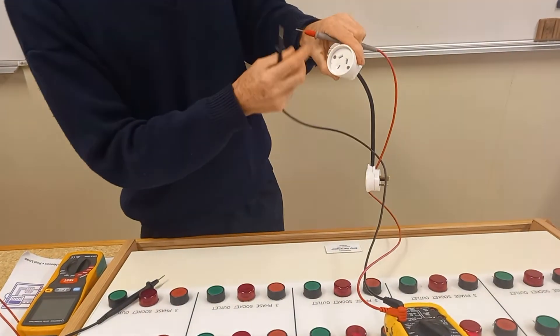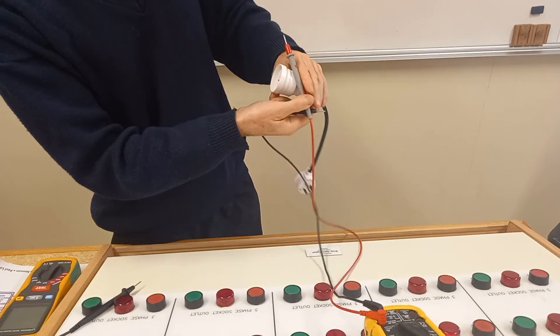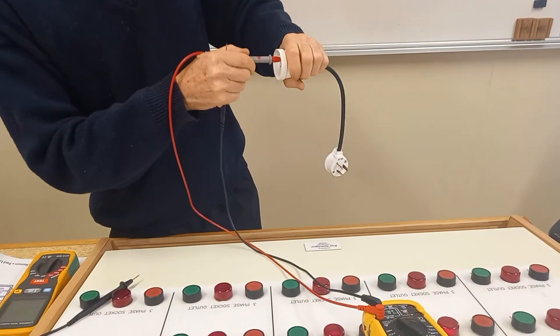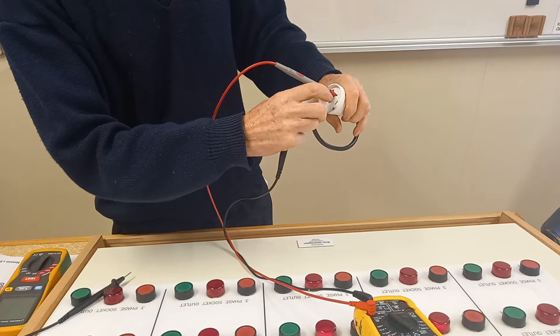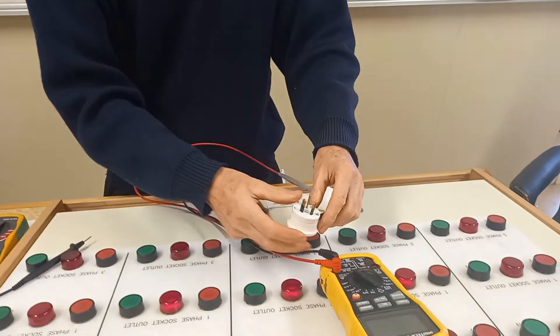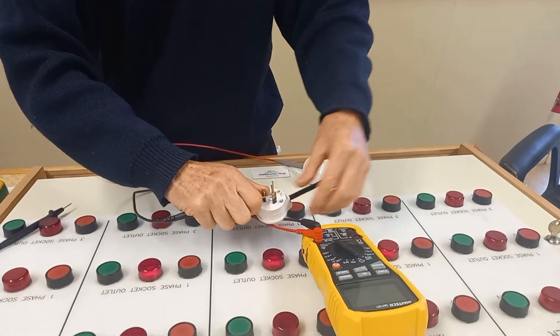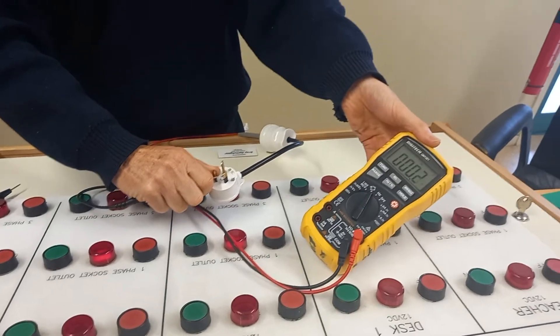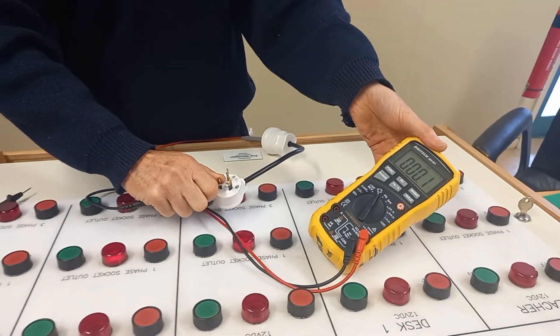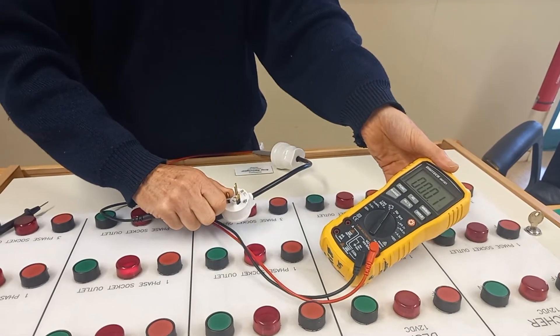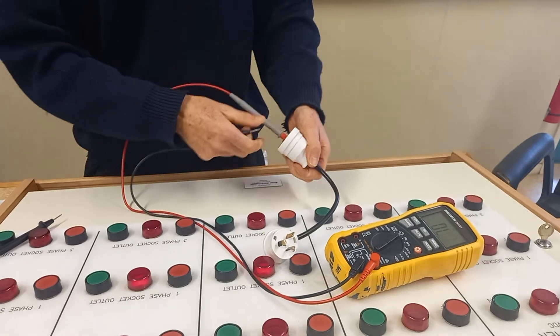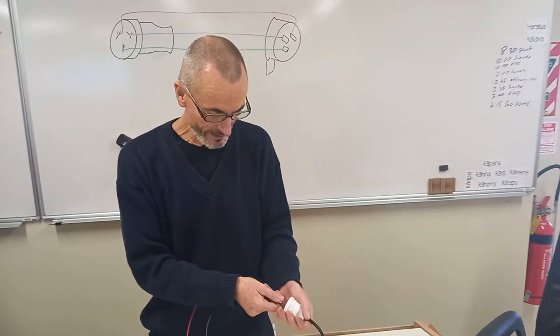There is my phase terminal there. I go to plug that in there. There is my phase terminal there, I expect low resistance and I'm getting it: 0.1. So that's proved continuity and it's also proved polarity.